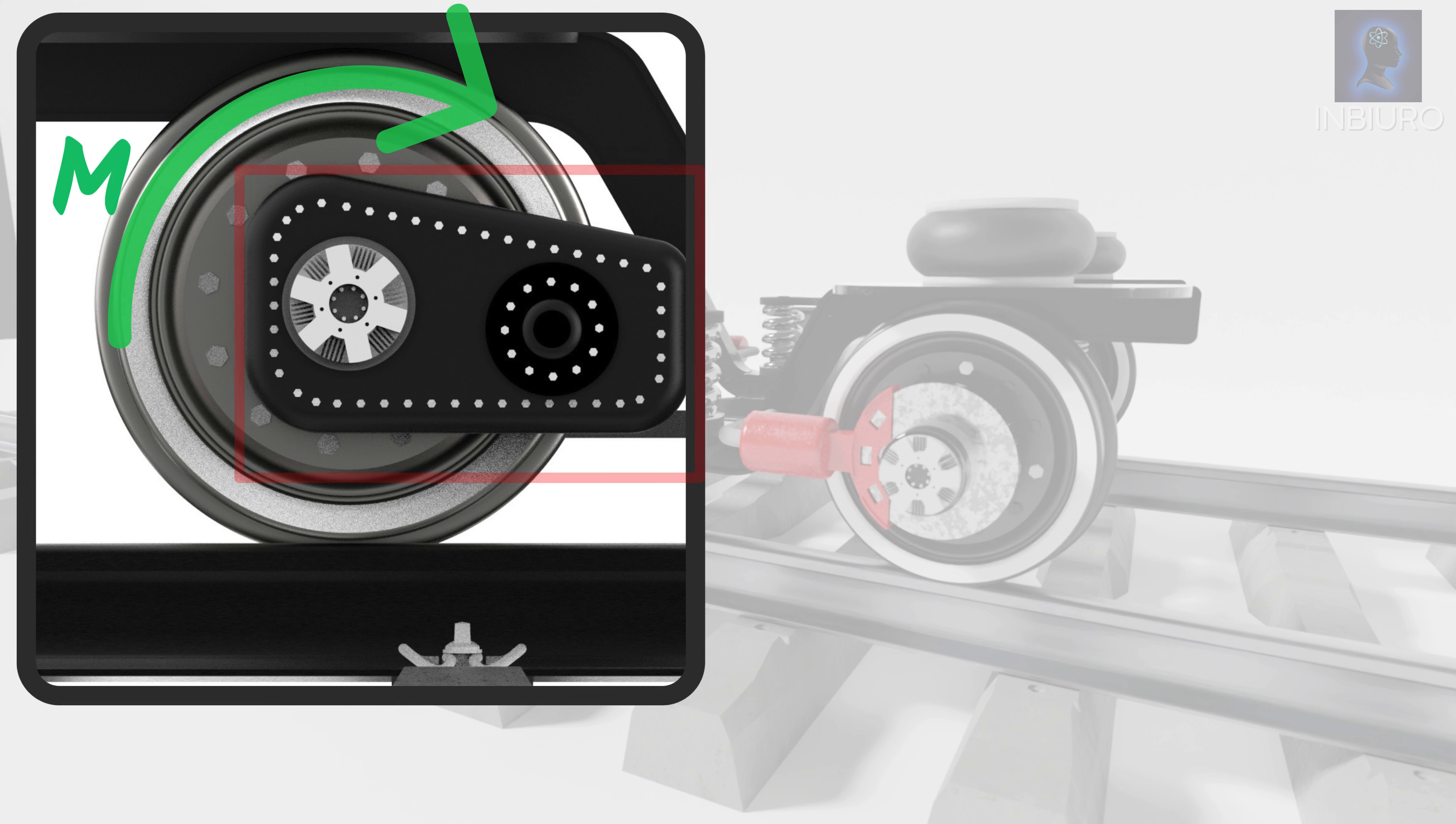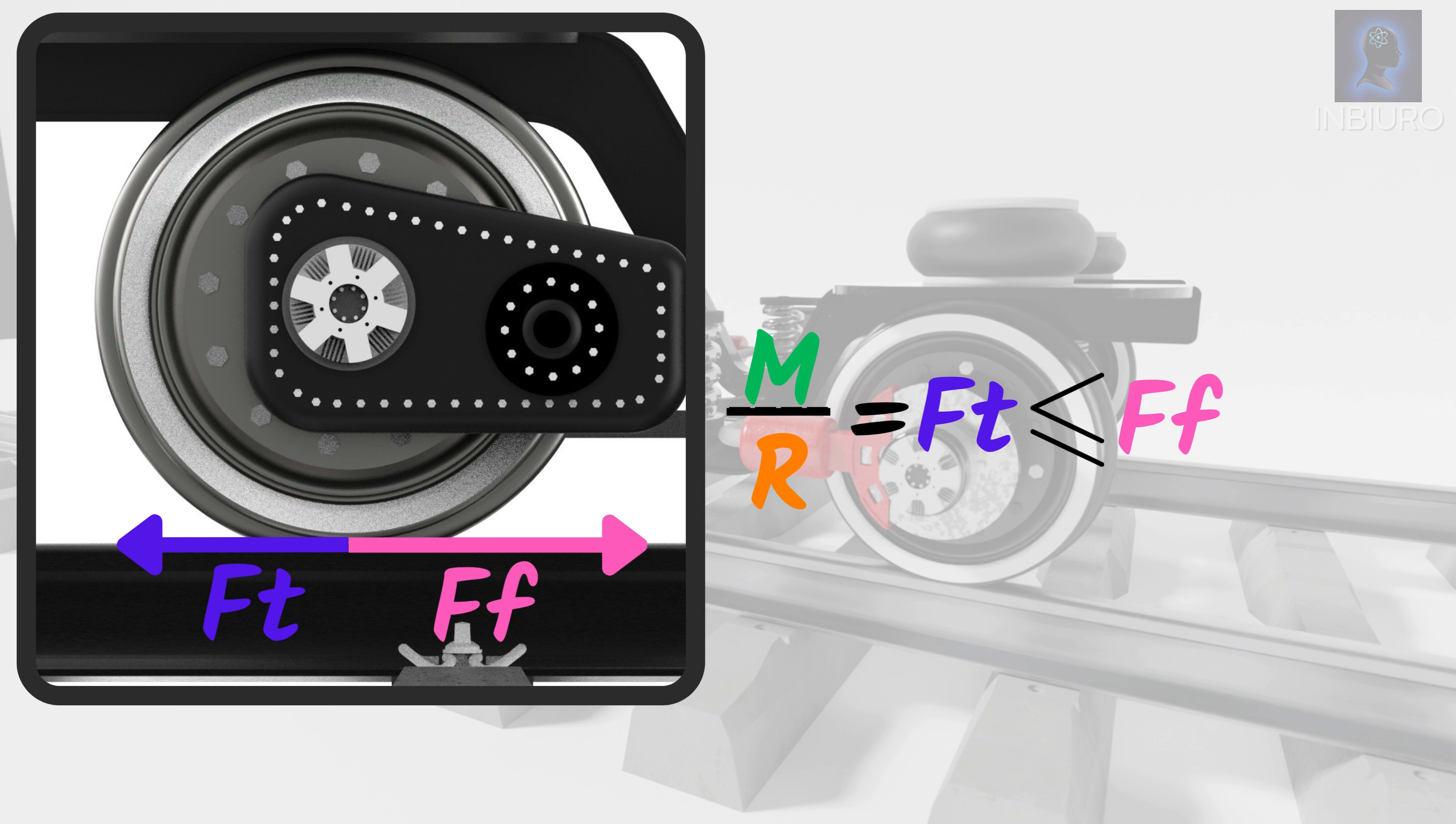Driving system provides moment to the driving axle. The moment M divided by the wheel radius equals traction force that accelerates the train. The traction force must not exceed force of friction to prevent the wheels from skidding.